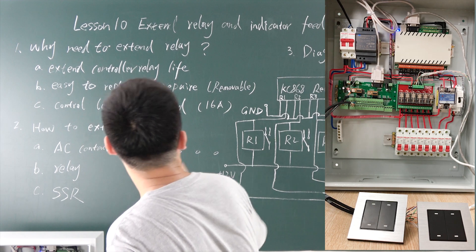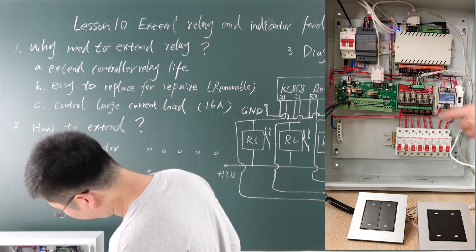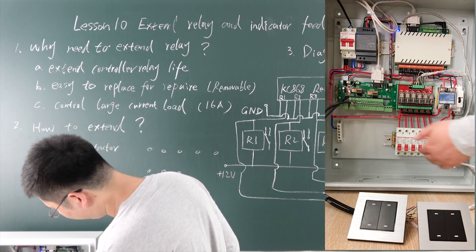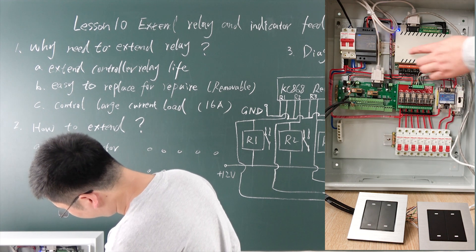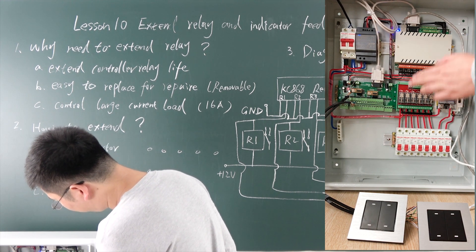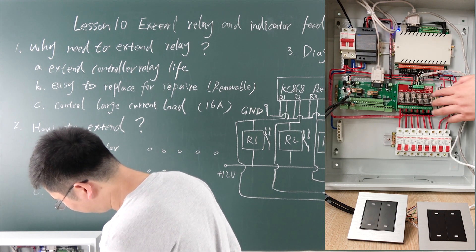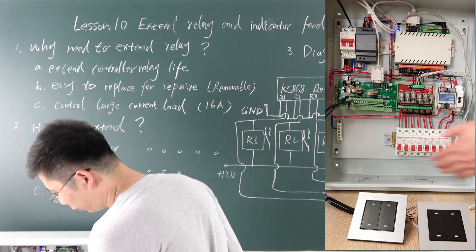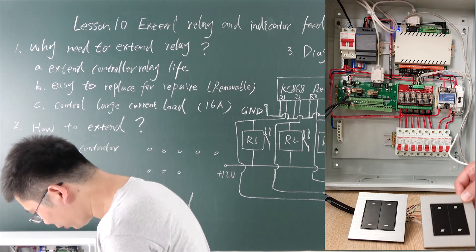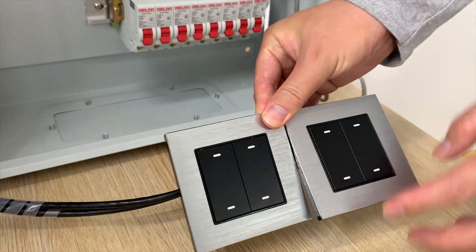We can also use an external relay, just like this box. We can see this extended relay because the power and the load will be controlled by this external relay and not by the relay inside the box. That internal relay controls this external relay, and the external relay contains the power load. You can see this is our switch panel, which supports 8 channels.